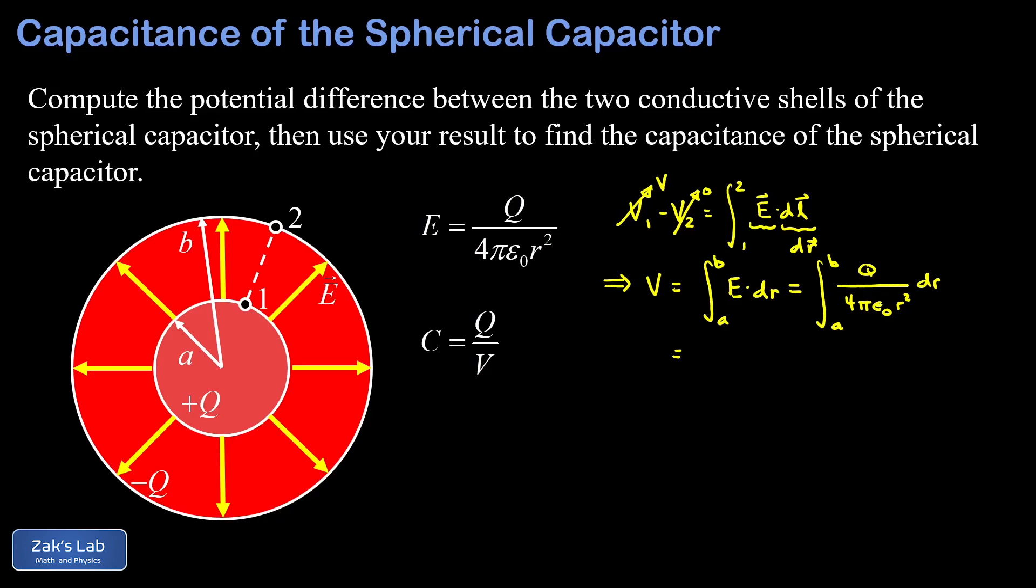Everything there is constant except for the 1 over R squared. And the integral of 1 over R squared is negative 1 over R. So I have my constants out in front, Q over 4 pi epsilon zero, the antiderivative of 1 over R squared, which is negative 1 over R. And then we evaluate across the limits of integration from A to B. Plugging in the upper limit of integration, I end up with a negative 1 over B. And in the lower limit, I have a double negative there. I'm subtracting this negative thing. So I end up with plus 1 over A.